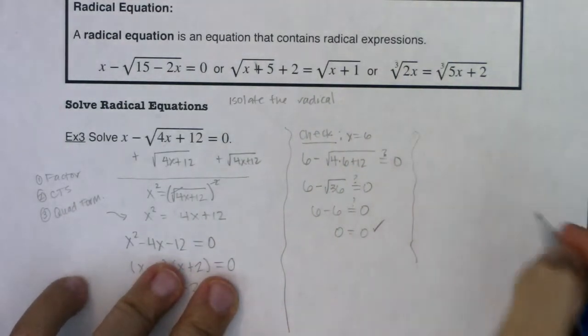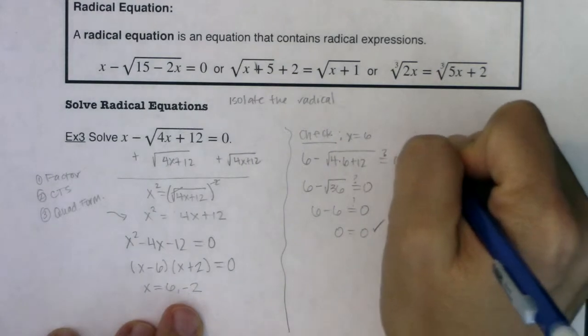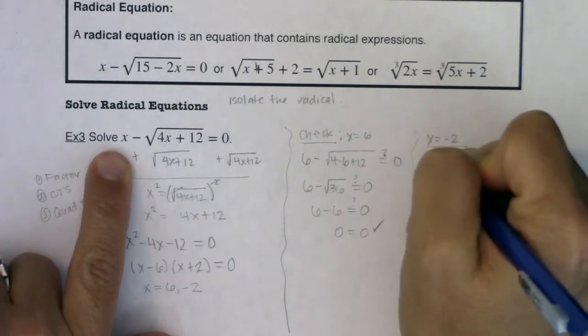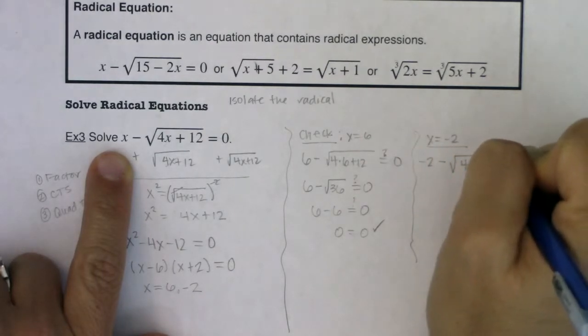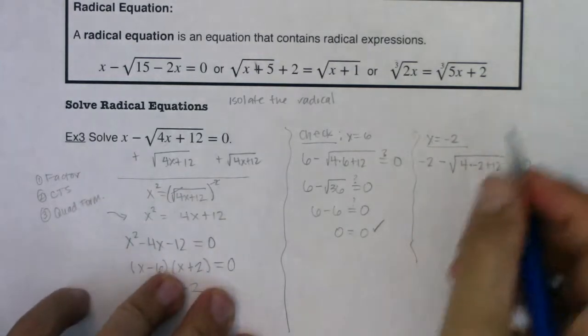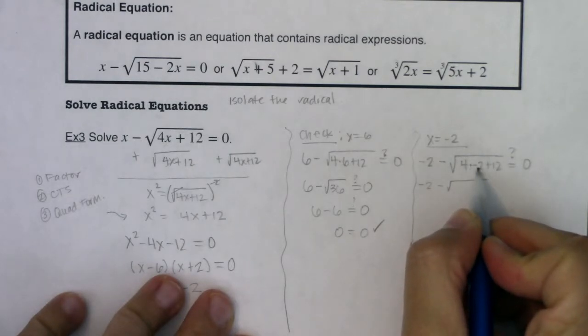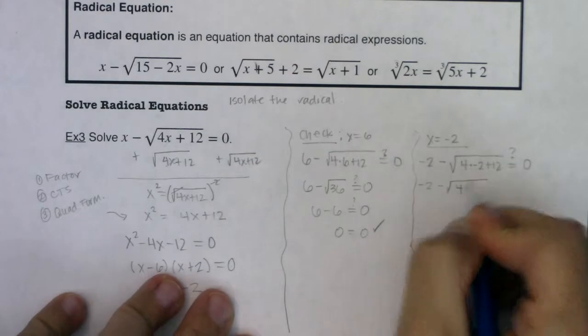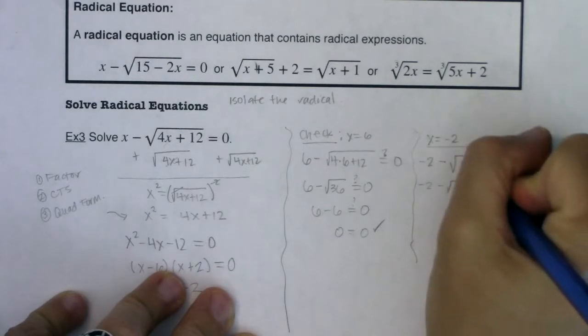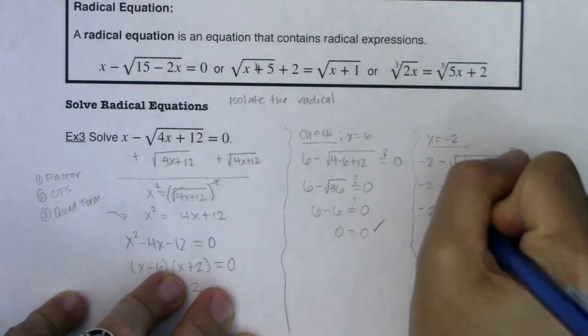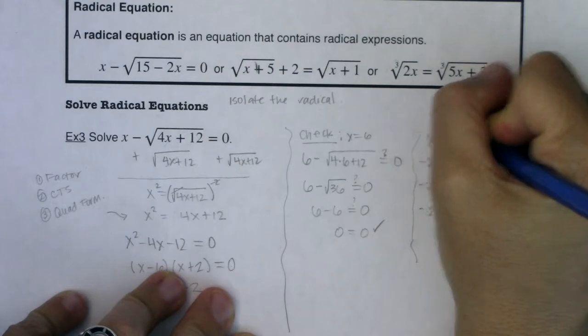I want us to check the other one now in case negative 2 was extraneous. Let's see if this one works. I'm going to do negative 2 minus the square root of 4 times negative 2 plus 12 is equal to zero. So let's see what we have. We have negative 2 minus the square root. 4 times negative 2 is negative 8. Negative 8 plus 12 is 4. Is negative 2 minus 2 equal to zero? No, it's not. So this we call an extraneous solution.